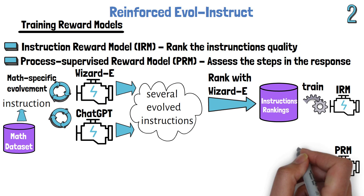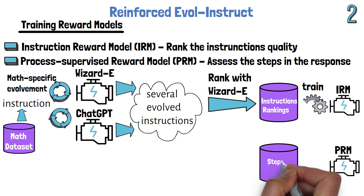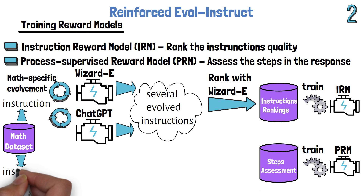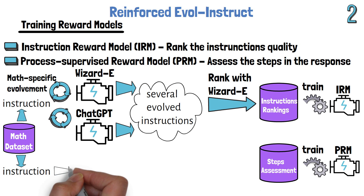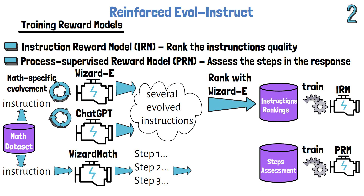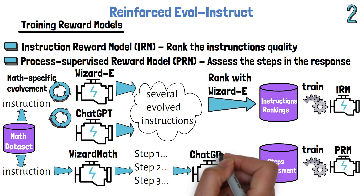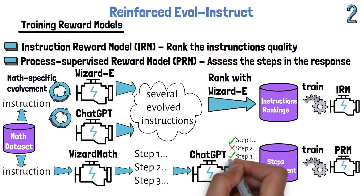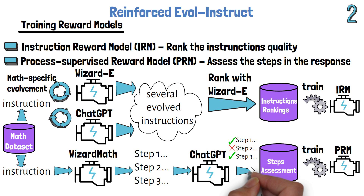To train the Process Supervised Reward Model, we create a database of step assessments and train the model on that dataset. For each instruction in the math dataset created in step 1, we pass it through our model from step 1 to generate a step-by-step response. We then assess the response using ChatGPT to get the ranking for each step, which we add to the steps ranking dataset used to train the PRM.